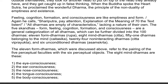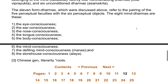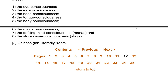A general categorization of all dharmas can be further divided into 100 dharmas: 11 form dharmas (Rupa), 8 mind dharmas (Citta), 51 dharmas belonging to the mind (Caitasika), 24 non-interacting dharmas (Citta-viprayukta), and 6 unconditioned dharmas (Asamskrta). The 11 form dharmas refer to the pairing of the 5 perceptual faculties with the 6 perceptual objects. The 8 mind dharmas are: the eye consciousness, the ear consciousness, the nose consciousness, the tongue consciousness, the body consciousness, the mind consciousness, the defiling mind consciousness (manas), and the storehouse consciousness (alaya).